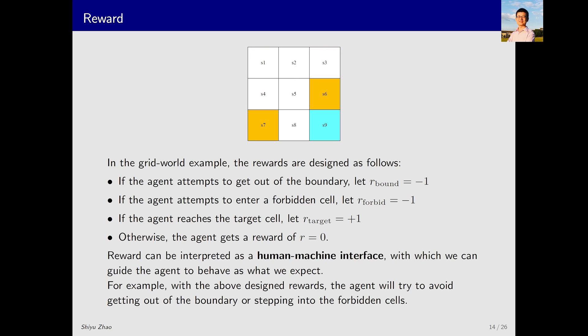Rewards can essentially be seen as a human-machine interface. What does this mean? Since the design of rewards is relatively intuitive, we can guide the agent by setting proper rewards to tell it what actions should and should not be taken. In the example mentioned above, by designing rewards in such a manner, the agent prefers not to exit the boundaries or enter forbidden areas. And it strives to reach the target area, enabling us to achieve our objectives through reward design.